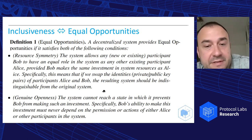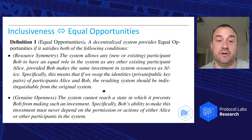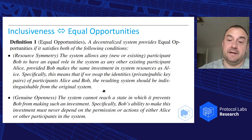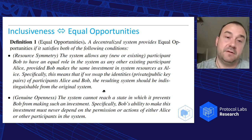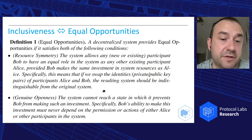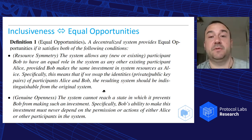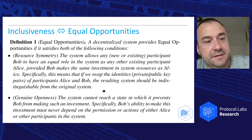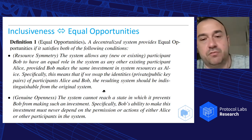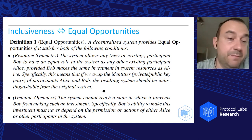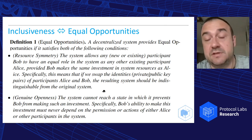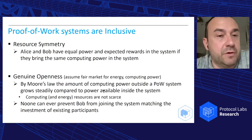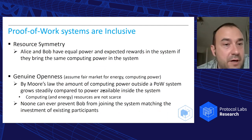What you don't get, as I'll briefly argue, is genuine openness in certain permissionless systems. The property says the system cannot reach a state in which it is not open — not permissionless. Specifically, a new participant's investment matching that of an existing participant must never depend on the action of existing participants. I think this captures the very difference in decentralization between proof of stake and proof of work.